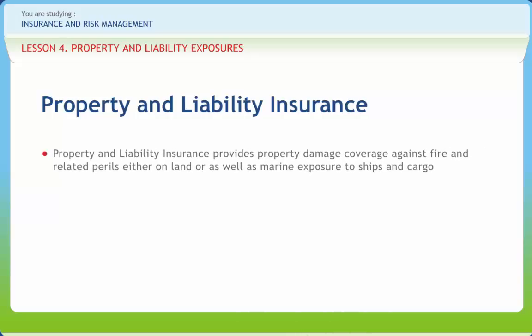Property and Liability Insurance provides property damage coverage against fire and related perils, either on land or as well as marine exposure to ships and cargo. The policy will cover items such as residential and commercial structures and the contents, vehicles, watercrafts and almost any other property to preserve the insurable interest of the owner. The concept of risk management as part of insurance promotes innovation to underwrite almost all imaginable risk exposure against any property as long as the applicant has an insurable interest.